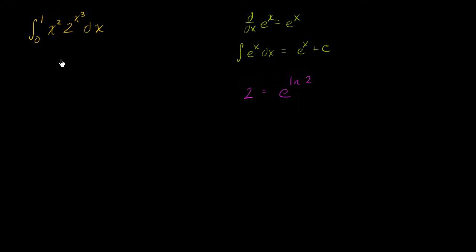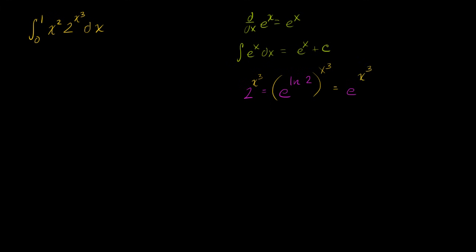Now what is two to the x to the third? If we raise both sides of this to the x to the third power, two to the x to the third is equal to — if you raise something to an exponent and then raise that to another exponent — it's going to be equal to e to the x to the third times the natural log of two.